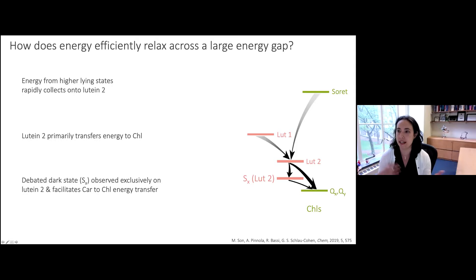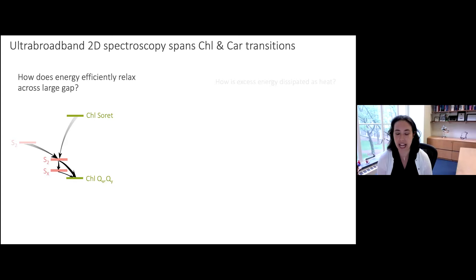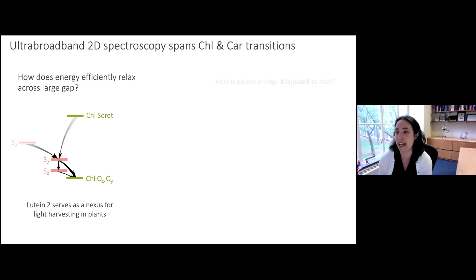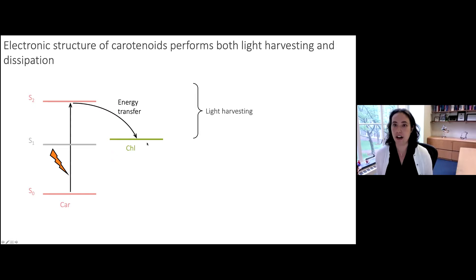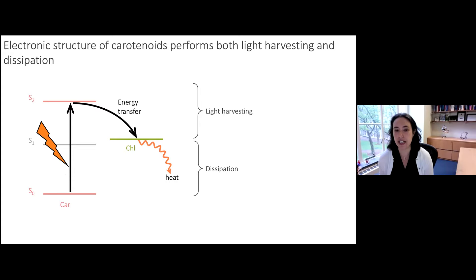In summary for the first question — how does energy efficiently relax across a large gap — our ultra-broadband 2D spectroscopy has resolved dynamics consistent with lutein 2 serving as a nexus for light harvesting, facilitating relaxation across the large energy gap. Now the next question is: how is excess energy dissipated as heat? Going back to the electronic structure, we've characterized the energy transfer pathway, but we also want to understand how under high light intensities the chlorophyll Q states return to ground state through dissipative non-radiative pathways.